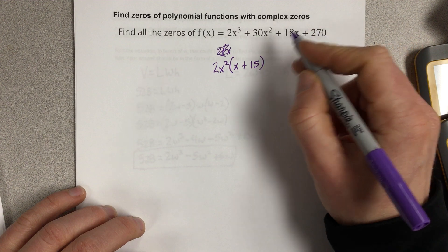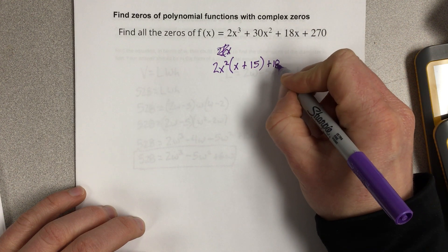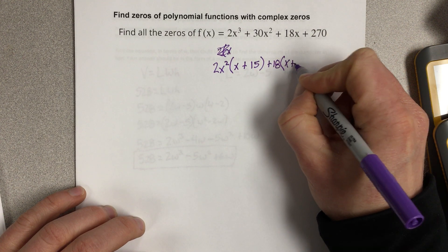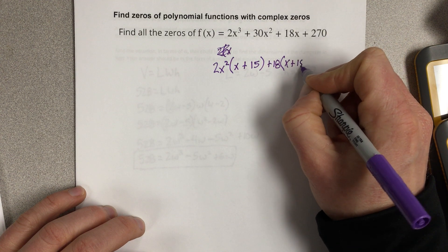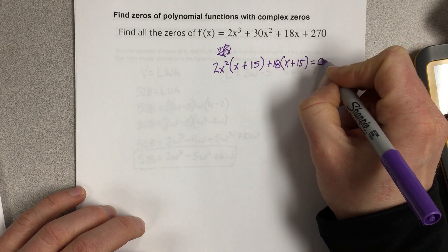And let's factor 18 out of this one, so that's plus 18. x plus, if you divide this by 18, that's 15. And that's all equal to zero.